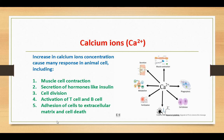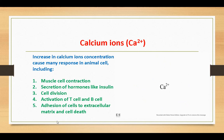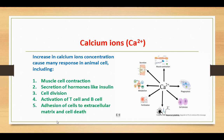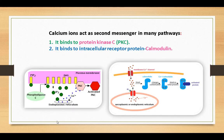These ions are normally bound or stored in intracellular components such as the endoplasmic reticulum, and can be released during signal transduction. Calcium ions act as second messengers in many pathways. They bind to protein kinase C (PKC), which activates a variety of biochemical changes. When calcium 2+ ions bind to an intracellular receptor protein called calmodulin, it activates many enzymes involved in metabolism of cyclic nucleotides, protein phosphorylation, secretory function, formation of microtubules, glycogen metabolism, and calcium flux.